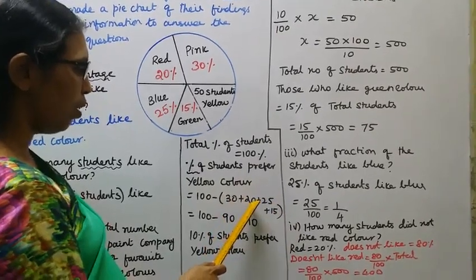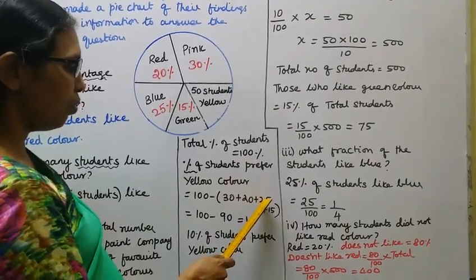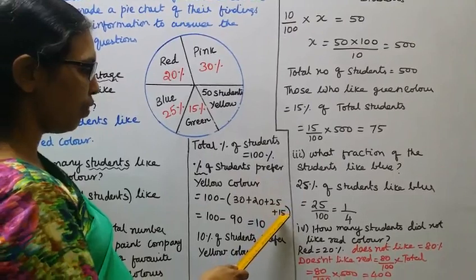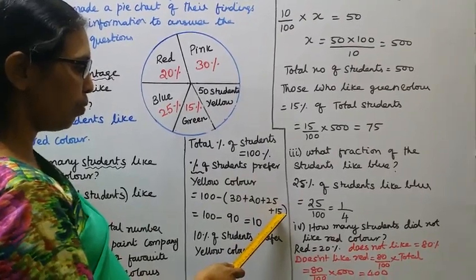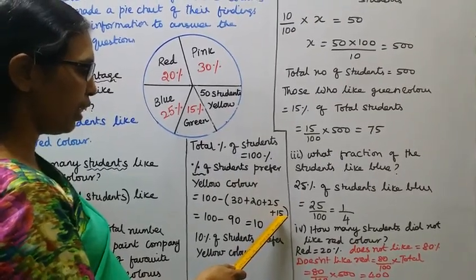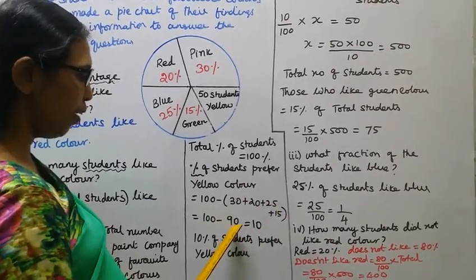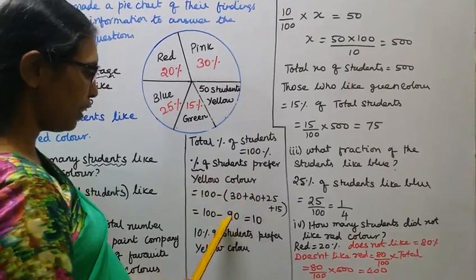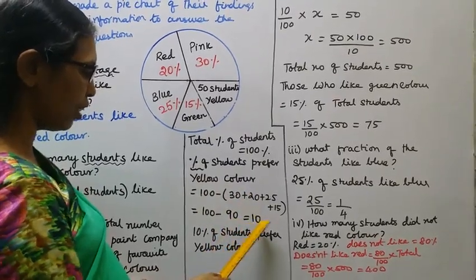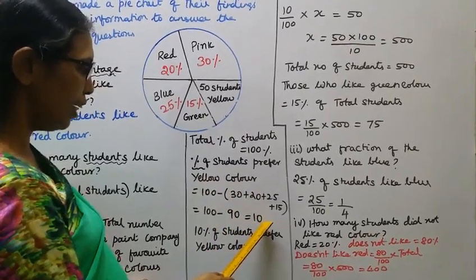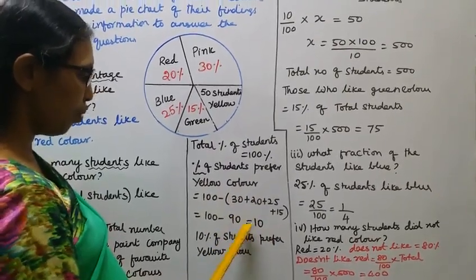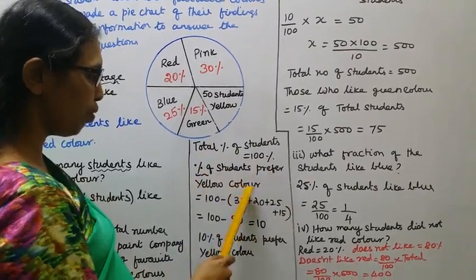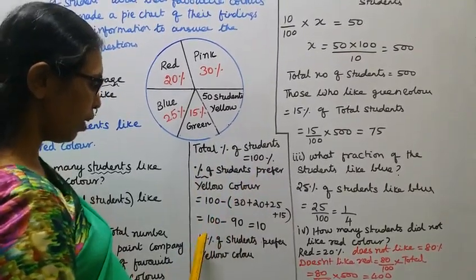30 plus 20 is 50. 50 plus 25 is 75. 75 plus 15 is 90. So 100 minus 90 equals 10. Therefore, 10% of students prefer yellow color.